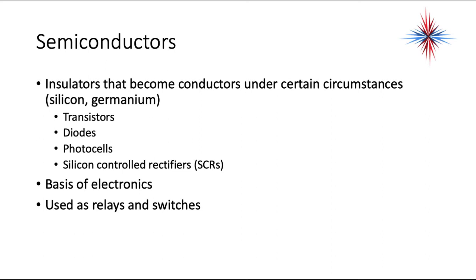Semiconductors are insulators that become conductors under certain circumstances. It could be silicon, germanium. They're used in transistors, diodes, photocells, and silicon-controlled rectifiers, SCRs. It's the basis of all electronics, and they're used as switches and relays. You'll find them on circuit boards.